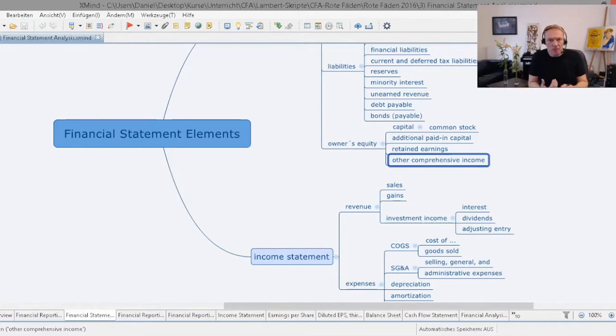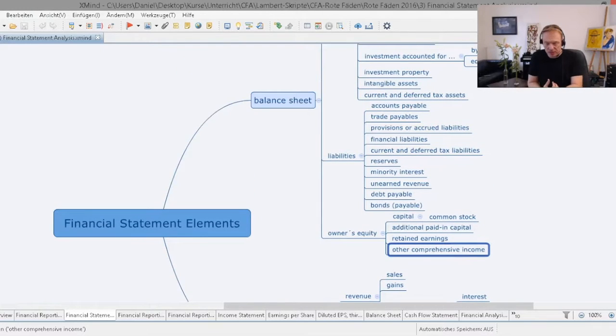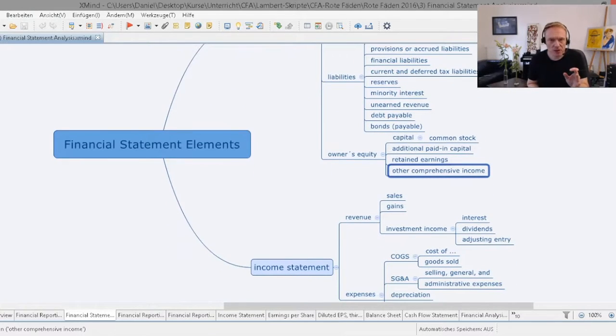As part of the balance sheet, you have other comprehensive income, which doesn't affect profit or loss, and you have the income statement, which is made of profits and losses. So,